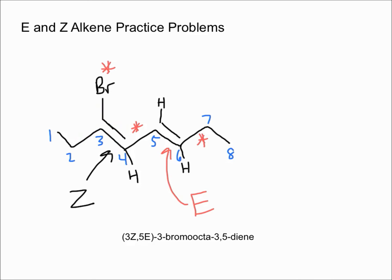It's important to remember that you want to designate the lower number for the start of the alkene. What I mean by that is you always use the lowest number of the alkene. This alkene runs from carbon 3 to carbon 4, so you always use the lower number when designating E or Z. That pretty much sums it up for the video.